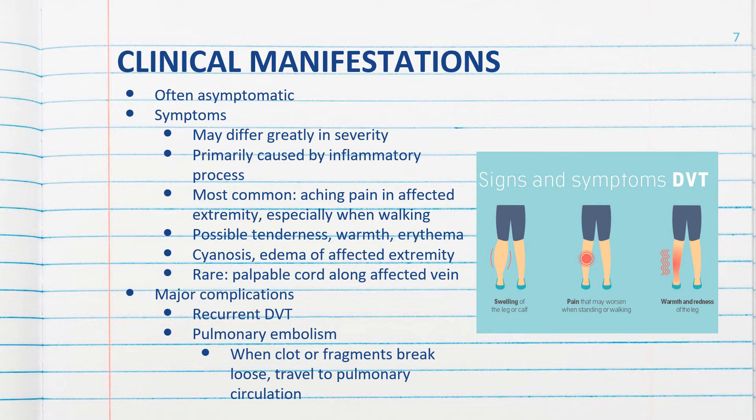Tenderness, swelling, warmth, and erythema may be noted along the course of the involved veins. The affected extremity is often edematous and may be cyanotic. In rare cases, a cord may be palpated over the affected vein.